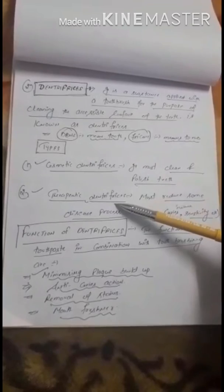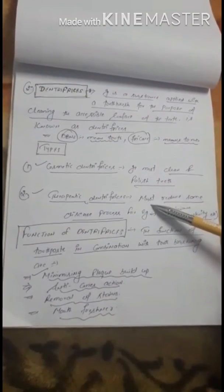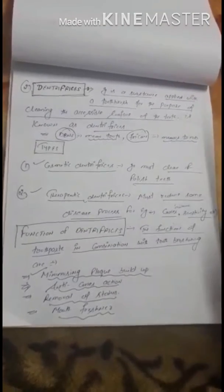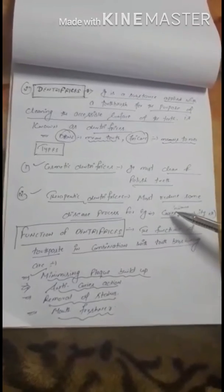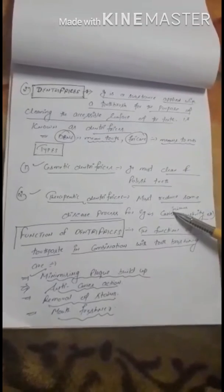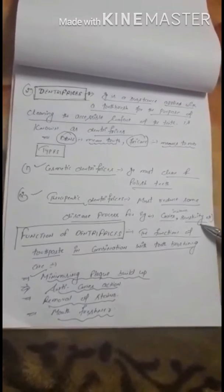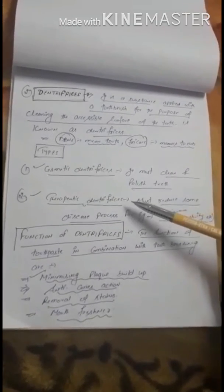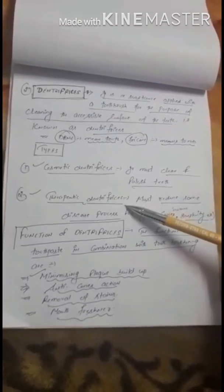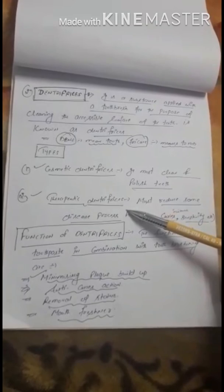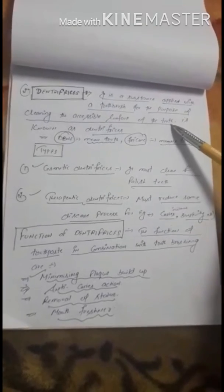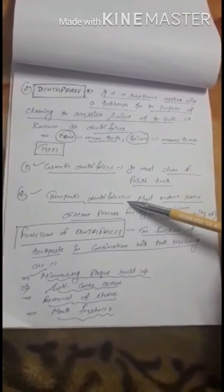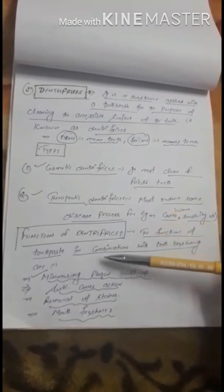Therapeutic dentifrice is used to reduce some kind of disease process, for example using an anti-caries agent or a desensitization agent to reduce sensitivity. These are called therapeutic dentifrice. So this is the definition of dentifrice and these are its various types.